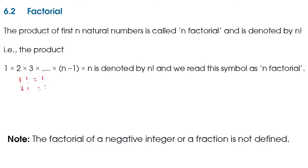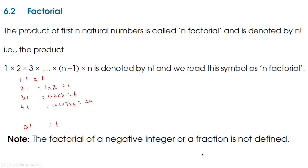Then 2 factorial is equal to 1 × 2, which is 2. Then 3 factorial is 1 × 2 × 3, which is 6. Then 4 factorial is 1 × 2 × 3 × 4, which is 24, and so on. One more point: 0 factorial is equal to 1. Also, the factorial of a negative integer or a fraction is not defined.